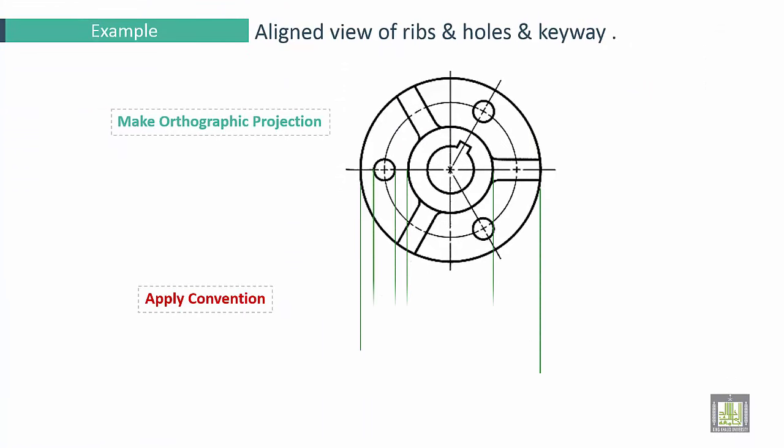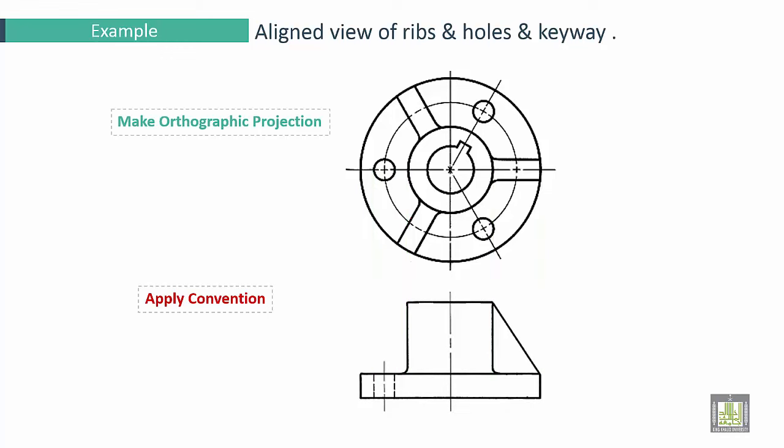For this example, Aligned view of ribs, holes and keyways: make orthographic projection and apply convention. First, we have to move this rib, and to move these holes by imagination. After that, we have to move keyway and we have to draw this hole. This is okay.